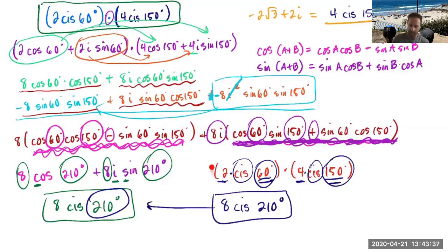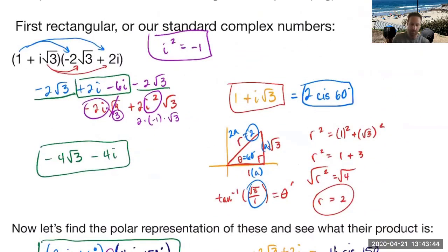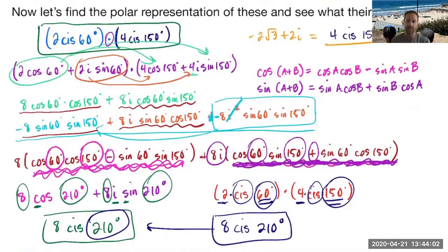Now we can jump from polar form to the answer a whole lot quicker. That was much faster than distributing, dealing with i squareds, like roots, and combining like terms. So that's the cool part — this is the derivation or proof. When multiplying complex polar numbers, we just multiply the radii to get eight, and take the cis of the two angles added together to get 210 degrees.